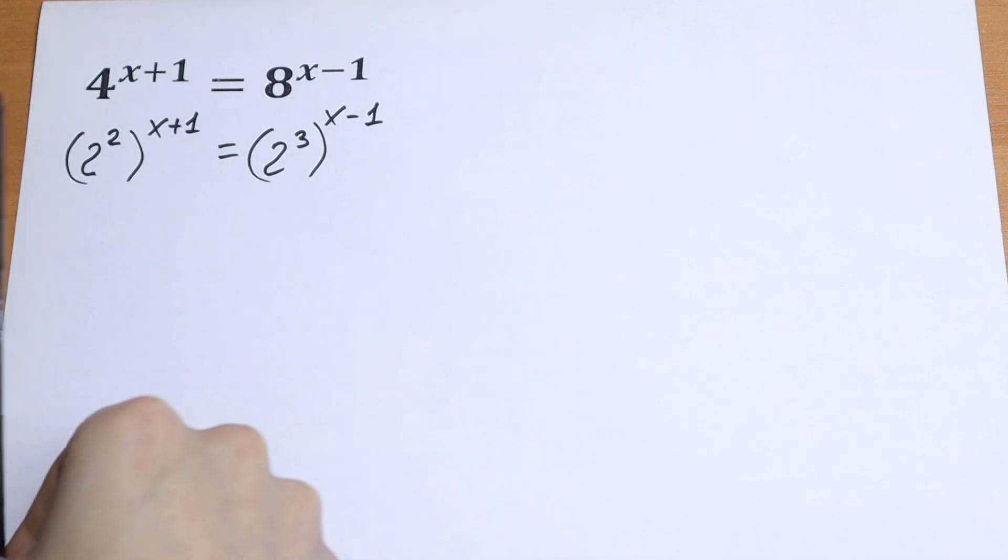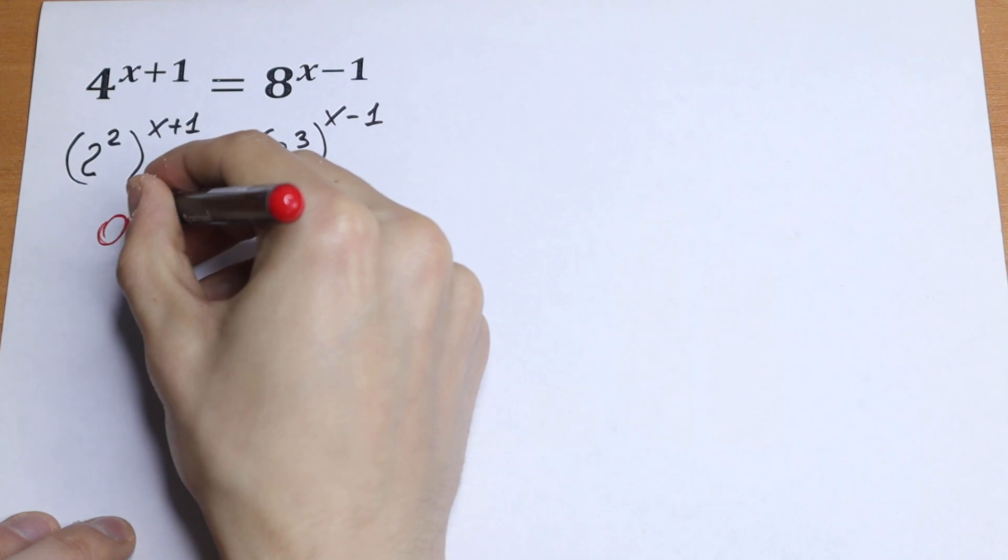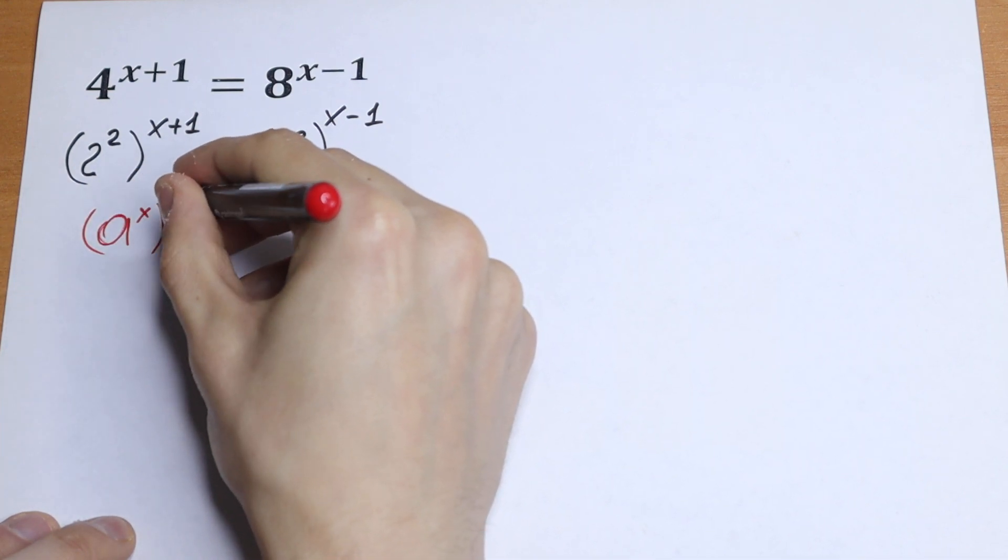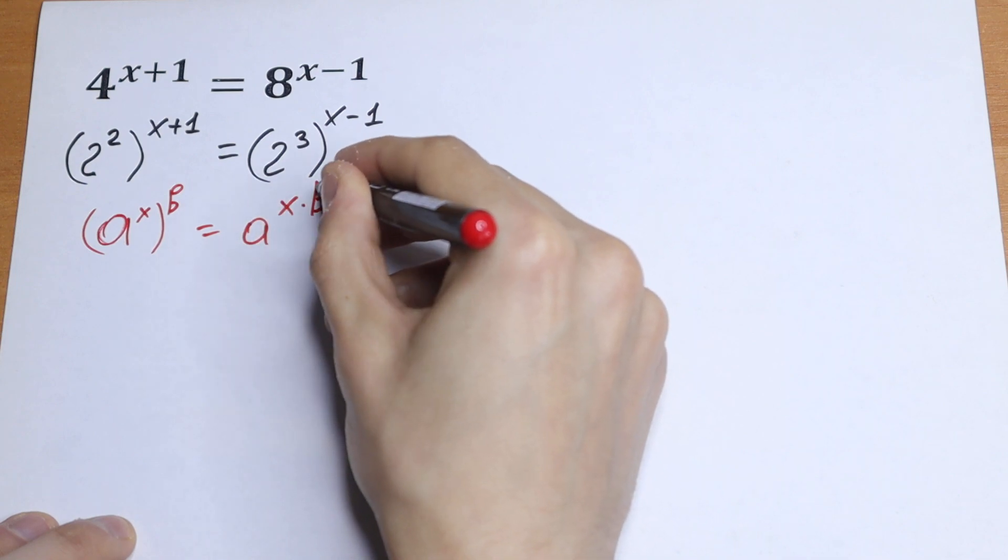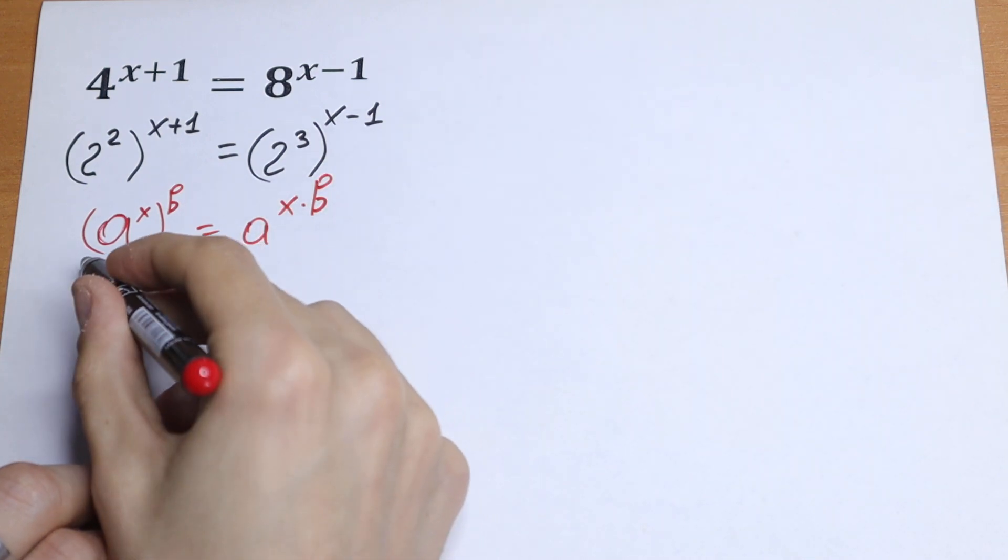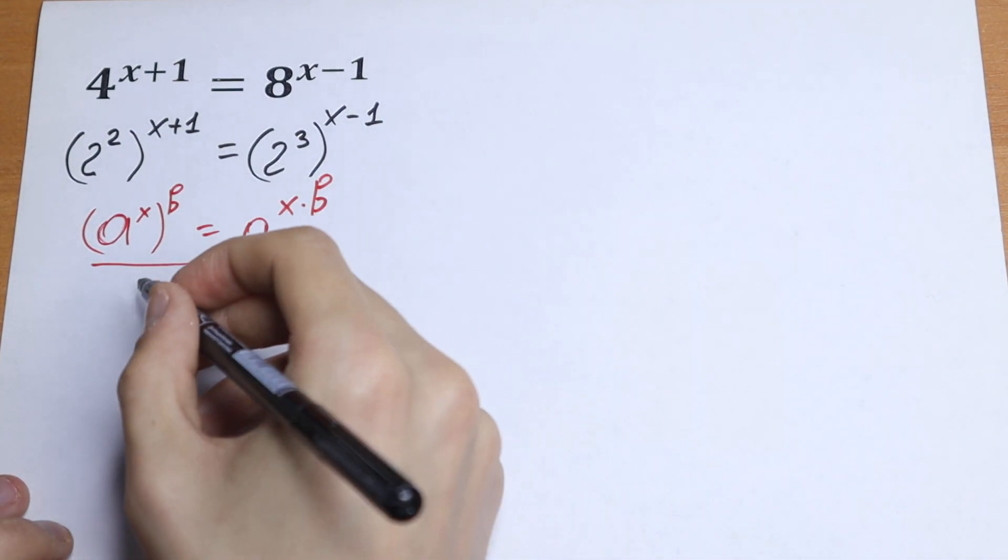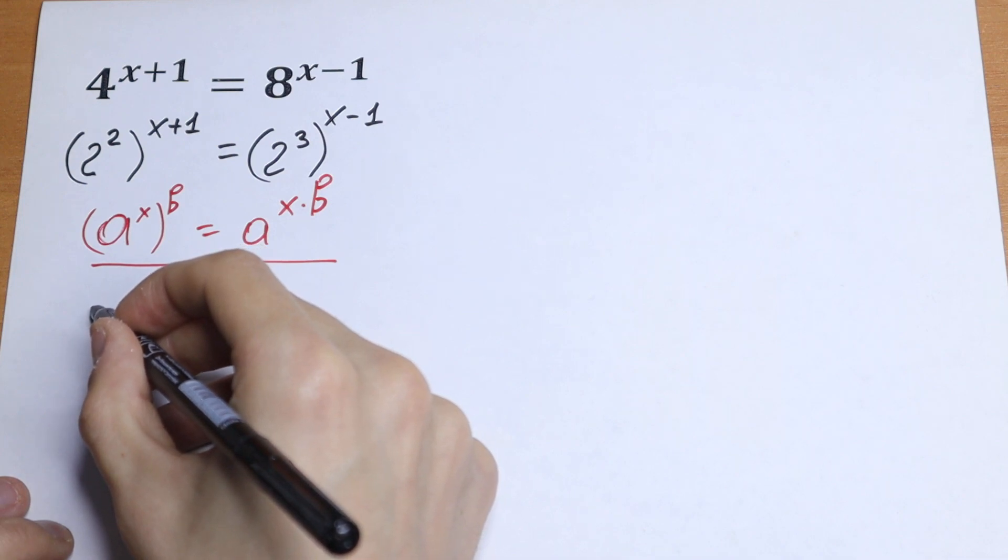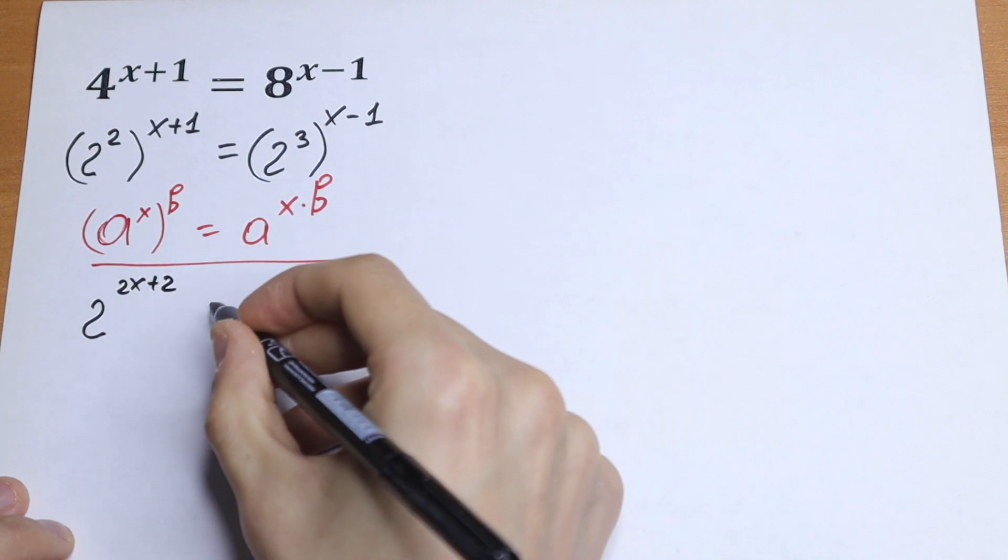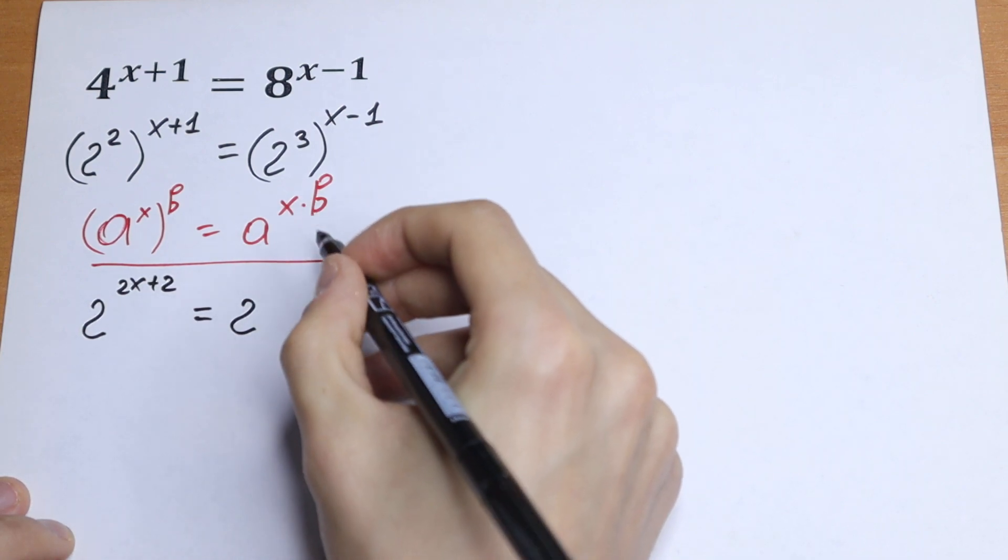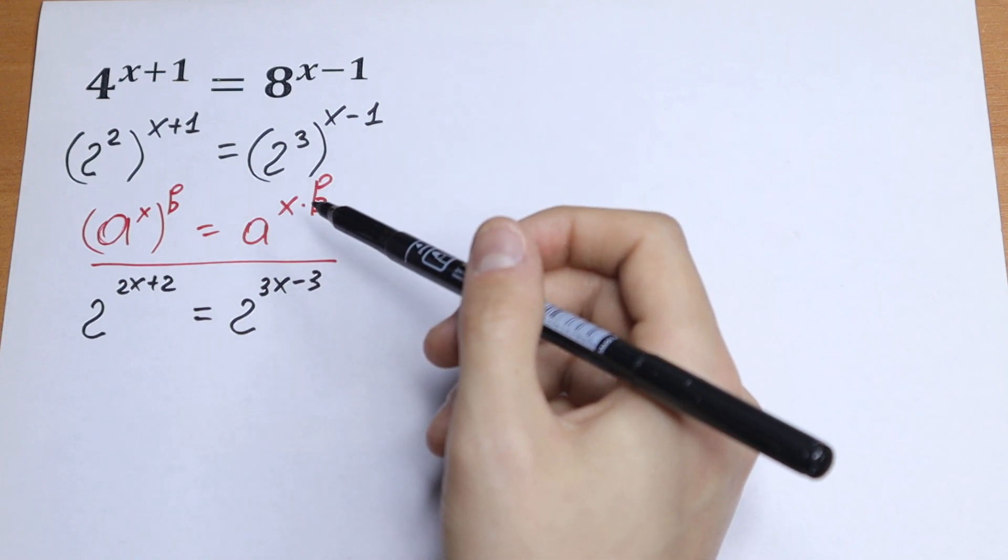If we have a situation like that, if you have a to the power x raised to the power b, we are multiplying our powers. So we just need to multiply our exponents. As a result, we will have 2 to the power 2x plus 2 equals 2 to the power 3x minus 3. Just simplifying a little bit using this rule.